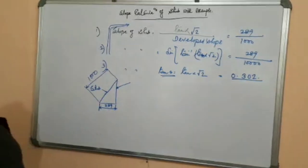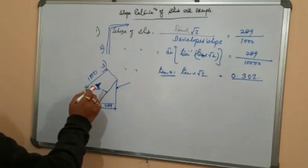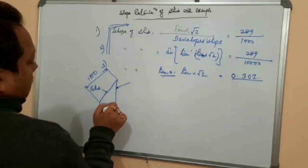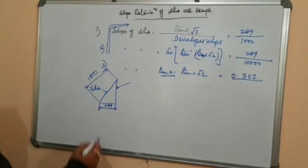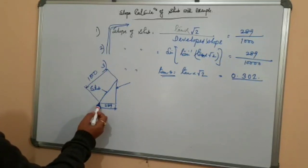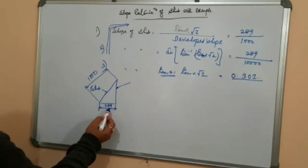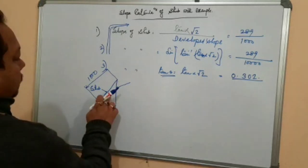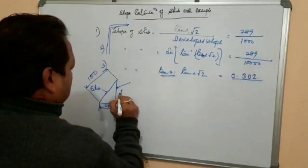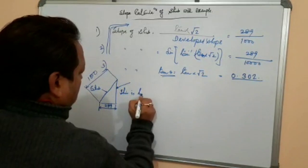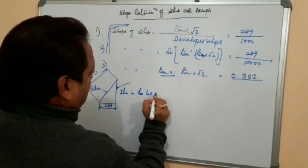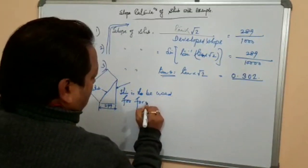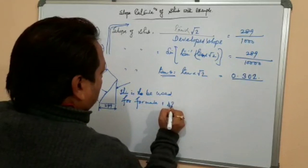For formulas one and two: mark 1000 from the top of the staff along the heel of the staff. Suspend a plumb line (oolong). Where that 1000 measurement falls, mark the horizontal distance — that perpendicular distance should be 289. That horizontal distance is your slope of staff.